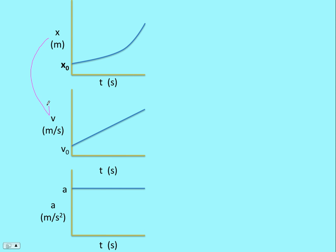If we have position and we want to figure out the velocity, we take the slope. And if we have velocity and we want to figure out the acceleration, we take the slope.